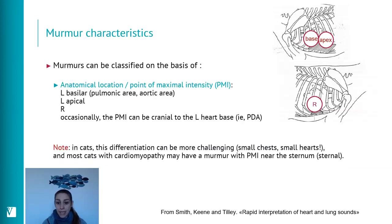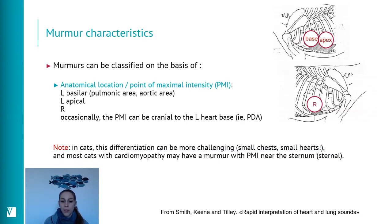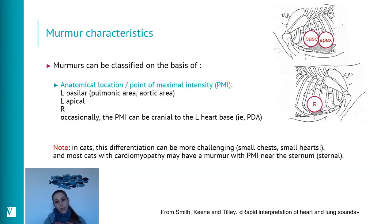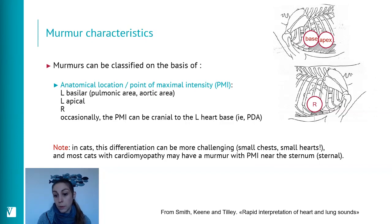Murmurs can also be heard sternally, as we see sometimes in cats. Cats have small chests and small hearts, and the typical murmur of dynamic left ventricular outflow tract obstruction in cats with hypertrophic cardiomyopathy is heard best on the sternum. Swinging your stethoscope from one side to the other, you will likely hear it loudest at the sternum.